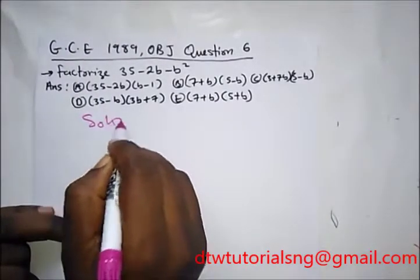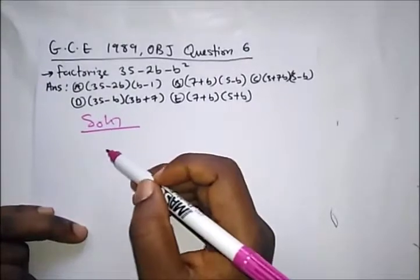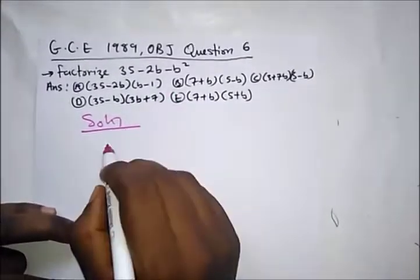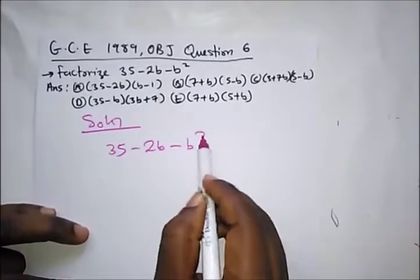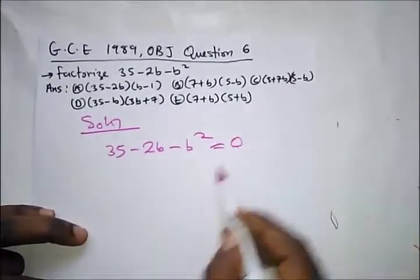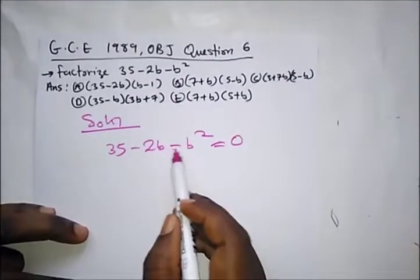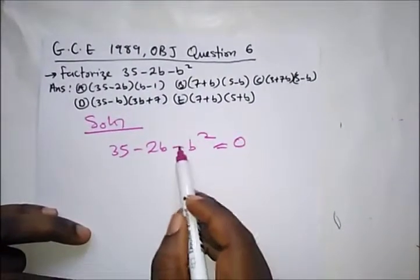We have here a question from GCE 1989 OBJ question 6. It says factorize 35 minus 2b minus b square equal to zero. To make this easier, so we don't start handling this minus sign here.